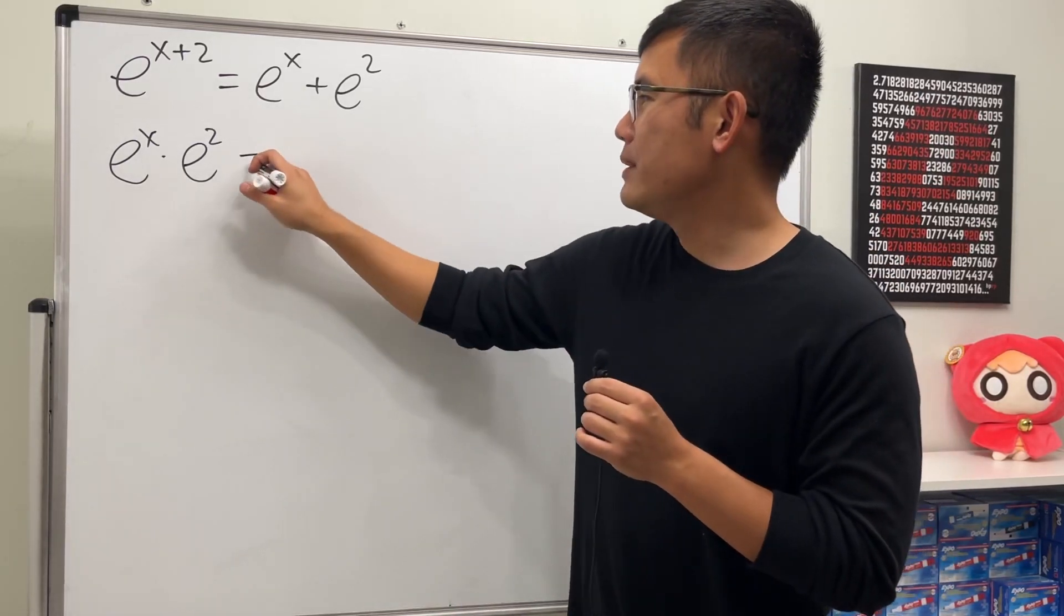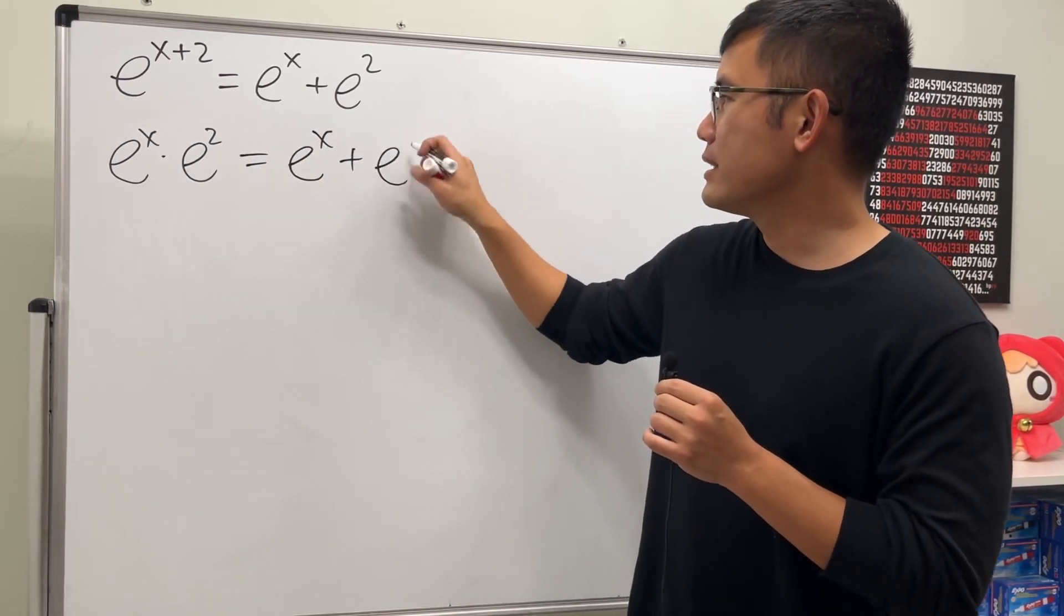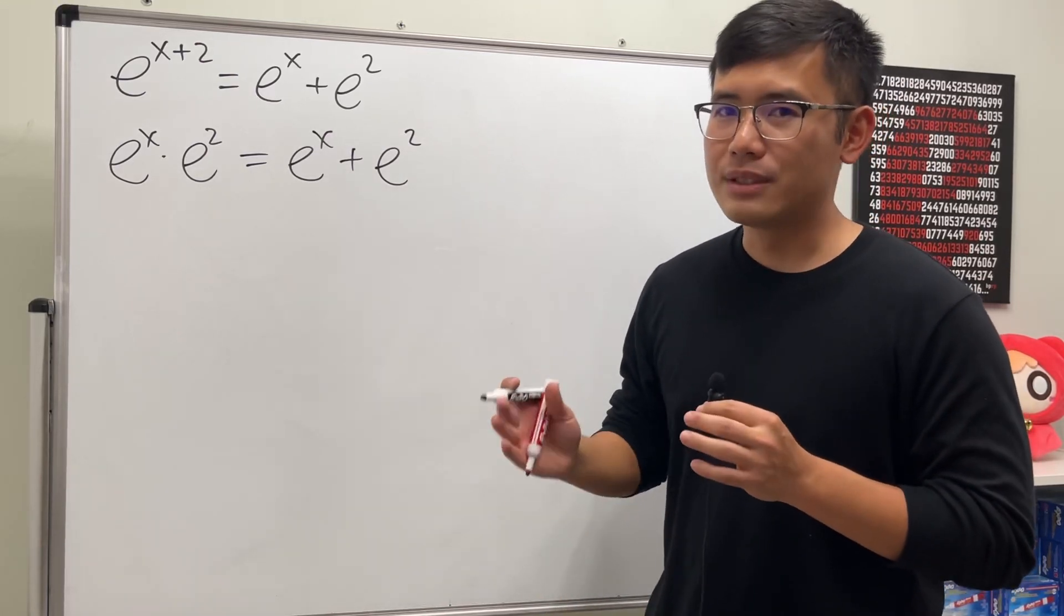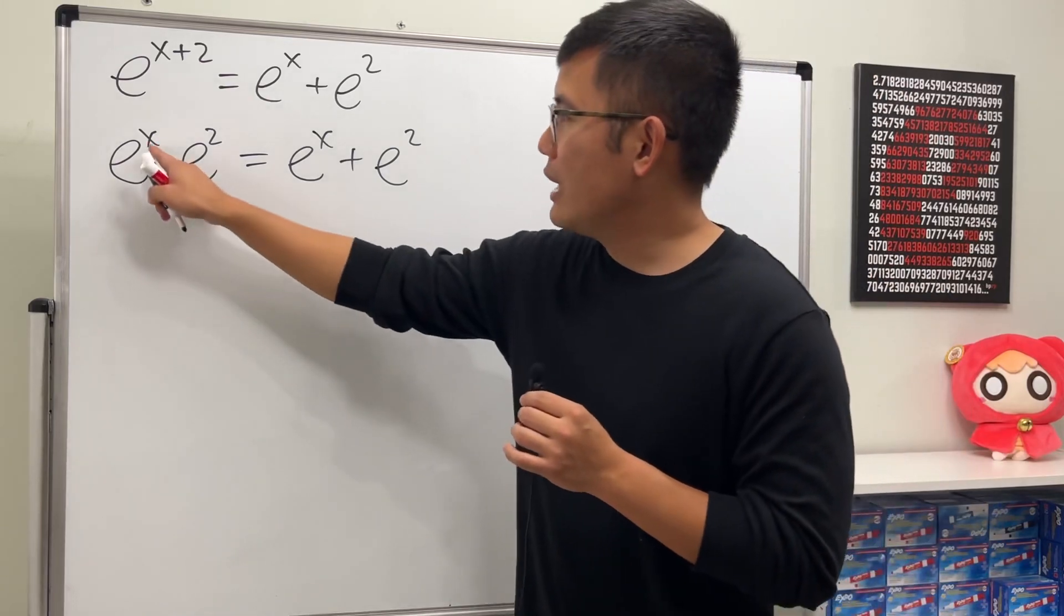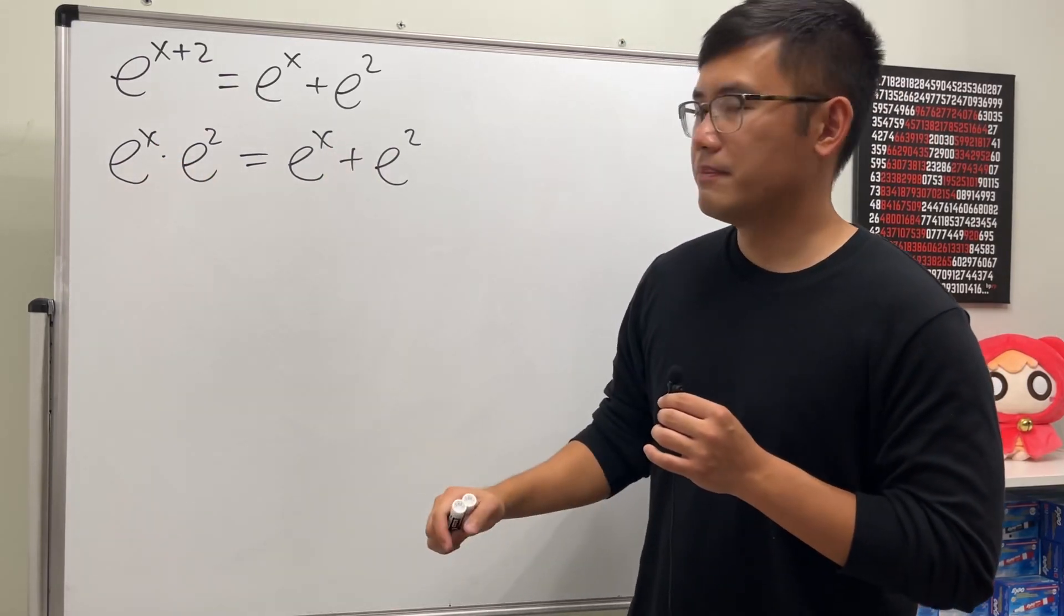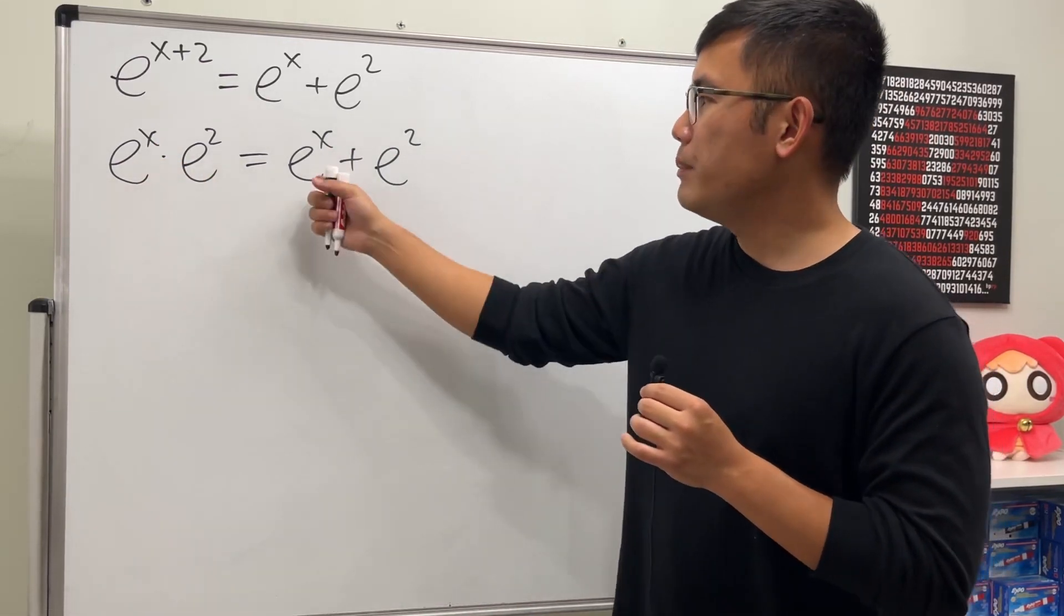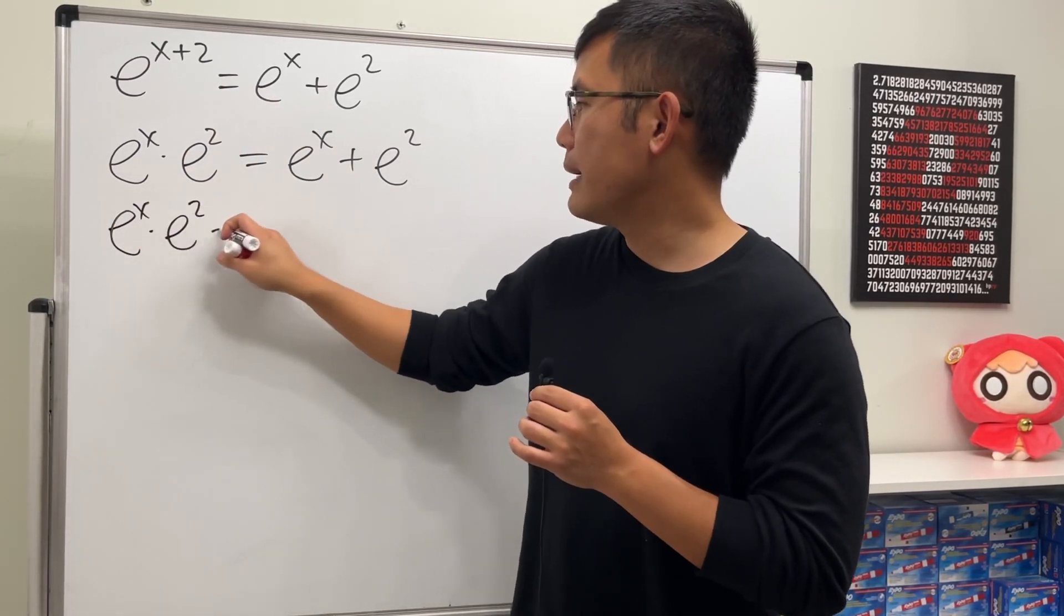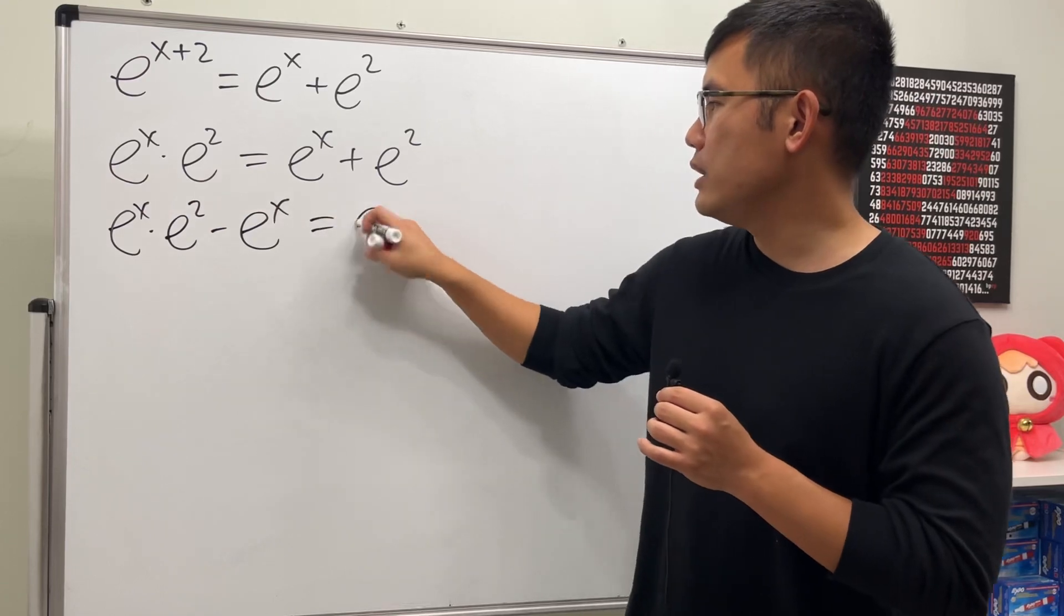And then we keep e to the x power plus e to the second power on the right-hand side. Now remember, we have to solve for x. Here we have the x and here we have the x. We'll move them together. Let me put this to the left-hand side, so we will have e to the x times e to the second minus e to the x, and this is equal to e to the second power.